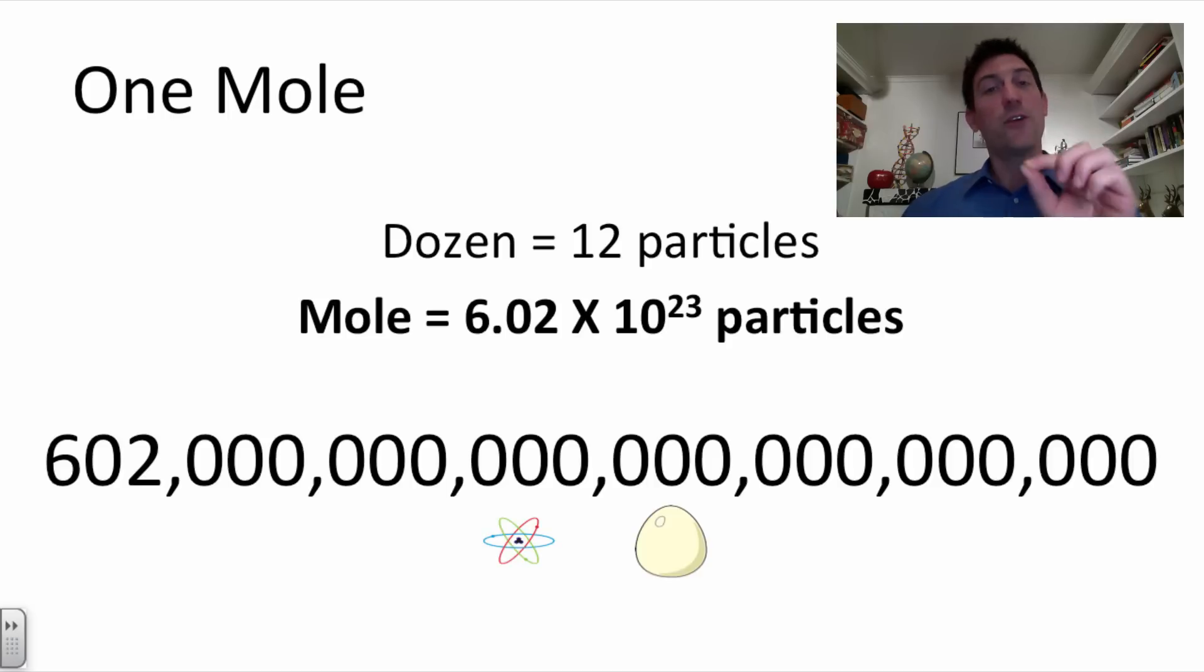All right now we could go out and technically we could get a mole of eggs. If we did it, it wouldn't be like a dozen. It wouldn't be 12 eggs. It would be 6.02 times 10 to the 23rd eggs. That would be a lot of eggs. But atoms are so small that we need a number that big just to be able to quantify how many of them exist.